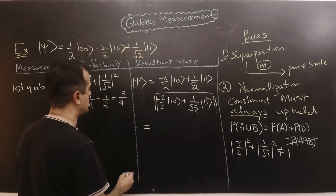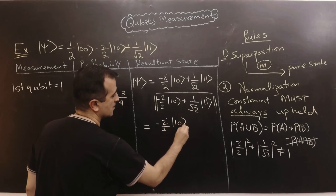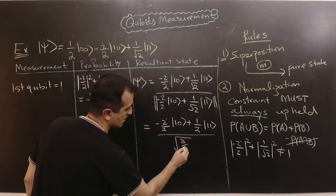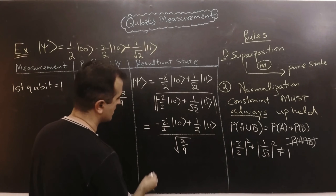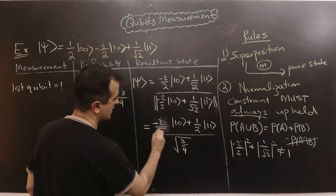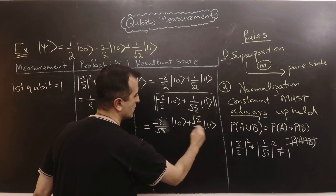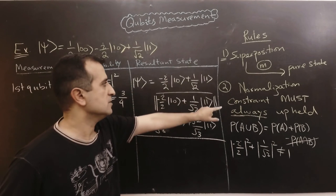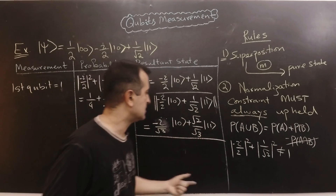The norm is the square root of the probability, which is square root of 3/4. After simplification, the normalized resultant state becomes: minus iota over square root of three times ket one-zero, plus square root of two over square root of three times ket one-one. This is the valid final state because the first qubit is in pure state of one and the overall register is normalized, so both rules are fulfilled.